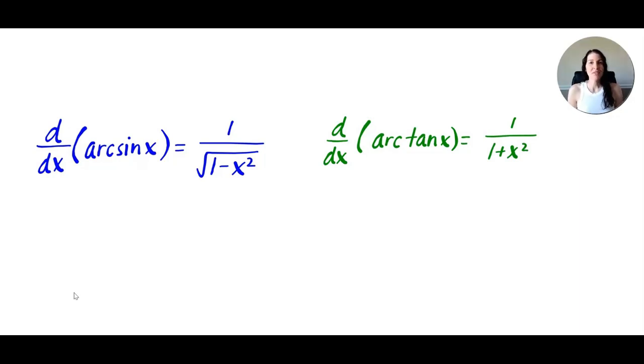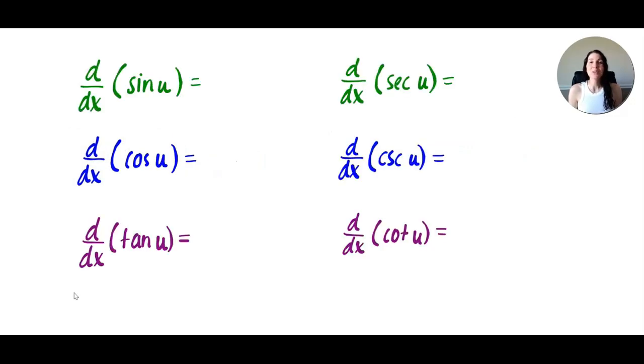So what if in all of these functions you have more than just an x? In that case, you do need to use the chain rule. So if you have anything other than an x, I'm going to call that u.